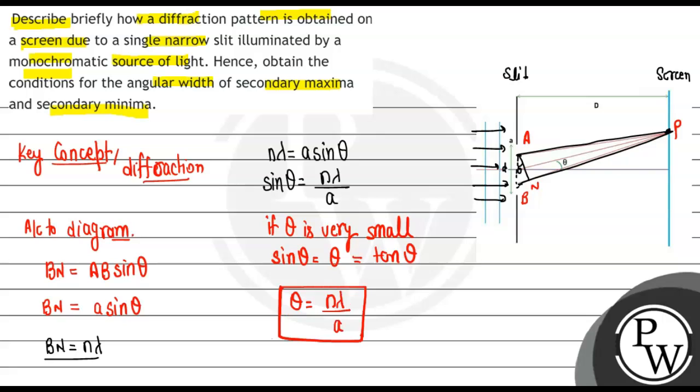So this theta that we got here became the angular position of minima. If we have to find the angular width of secondary maxima, this is the situation for minima.